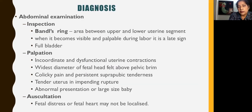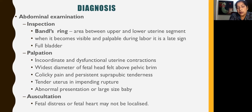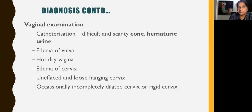On inspection, Bandl's ring can be identified as a depression between the upper and lower segments. When it becomes visible and palpable during labour, it is a late sign. You can feel a full bladder in the lower abdomen. On palpation, incoordinate and dysfunctional uterine contractions would be seen. The widest diameter of the fetal head would be felt above the pelvic rim. There would be colicky pain and persistent suprapubic tenderness. A tender uterus means there is impending rupture. At times we can identify either an abnormal presentation or a large-sized baby. Fetal heart sounds may not be localized or there may be fetal stress. In these cases, doing a vaginal examination is essential.